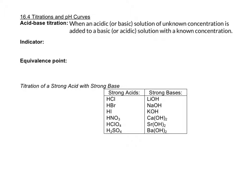And the way we're going to be doing this in the lab is you can either use a pH meter to monitor the pH as your titration goes, or frequently people will use an indicator, which is a substance whose color changes based on the pH. Usually you pick an indicator that changes color near the equivalence point.